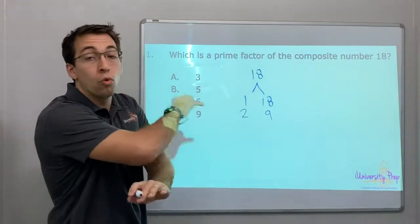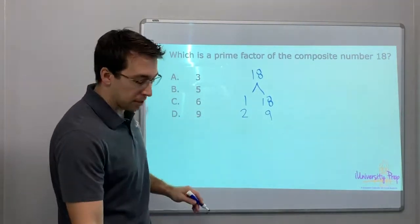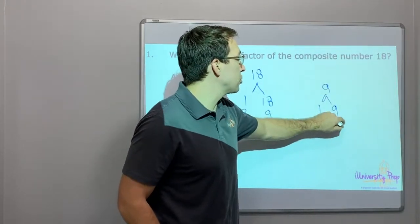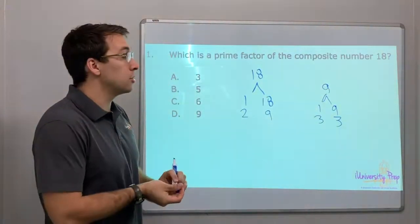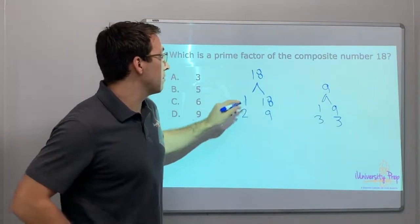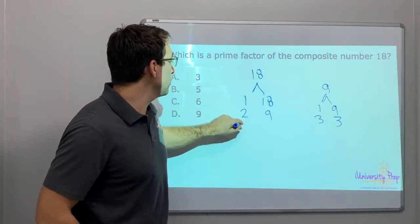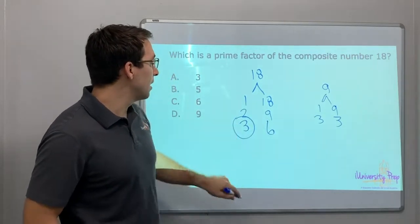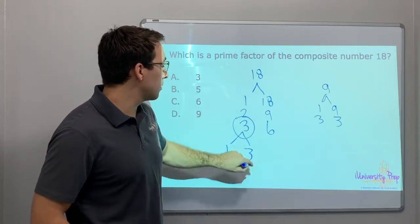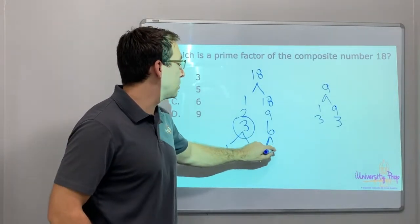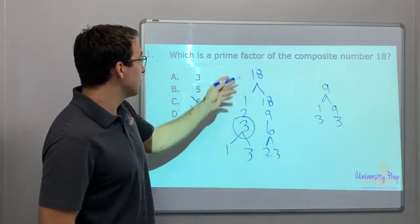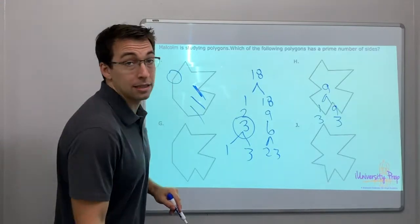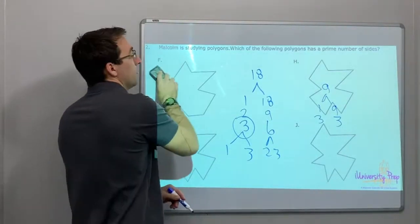Is 9 prime? No, because 9 equals 1 times 9 and 3 times 3, so it has more than two factors — not prime. And 3 times 6: 6 is 2 times 3, so it's not 6. 5 is not a factor of 18. The answer is 3. 3 is a prime number.